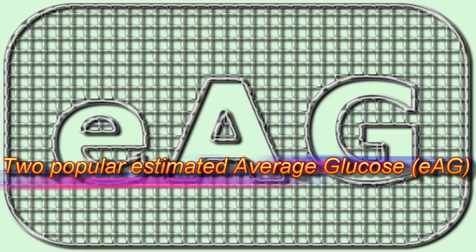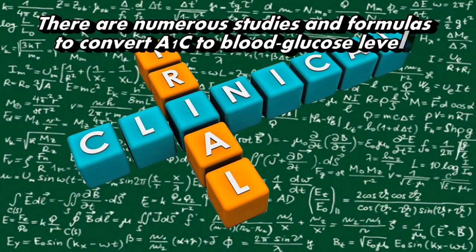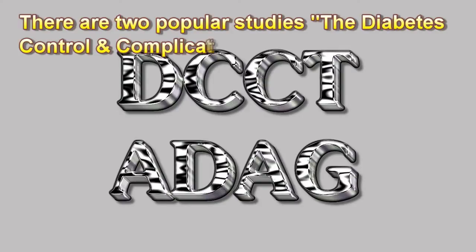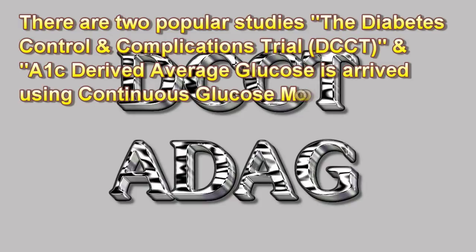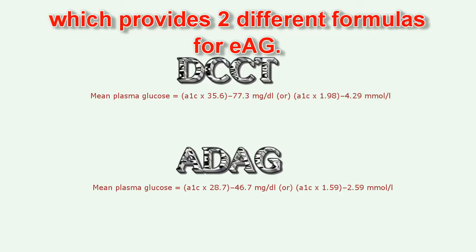There are two popular studies for converting A1c to blood glucose level: the Diabetes Control and Complications Trial (DCCT) and the A1c-Derived Average Glucose (ADAG) study, arrived at using continuous glucose monitors, which provide two different formulas for EAG.